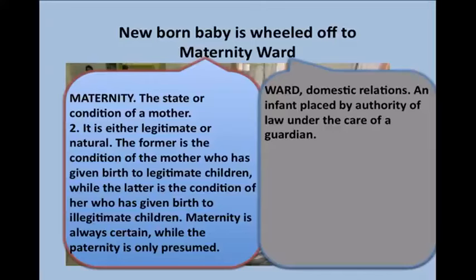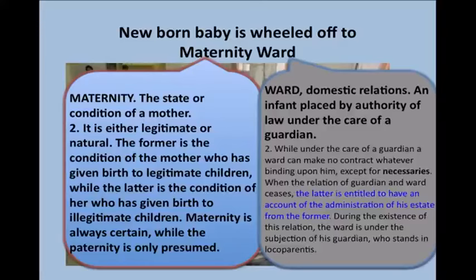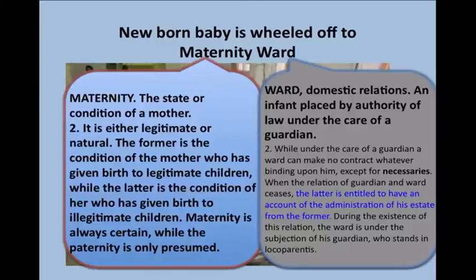They're telling us what's going to happen to us here — everything in the birth process tells us in these few words. While under the care of a guardian, a ward can make no contract whatever binding upon him. They're telling us we won't be able to make a binding contract because we're a ward of the state, except for necessaries. This is very important: if you are on some kind of benefit, the necessities of life must be cared for. So if you have a need and you go into social welfare and say 'this is a necessity of life and I need it' — not 'I want it,' I need it — they must provide it because you are under their guardianship.